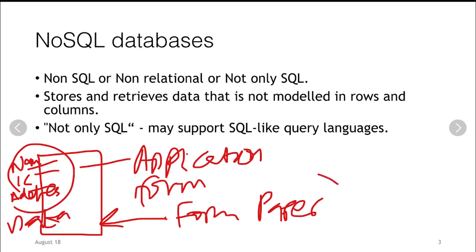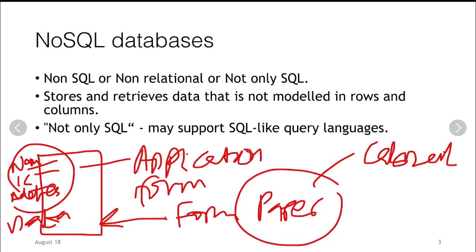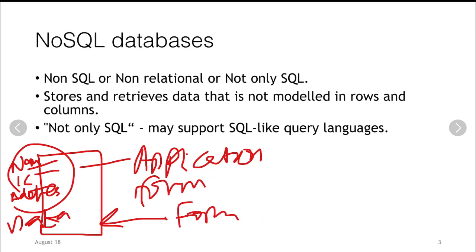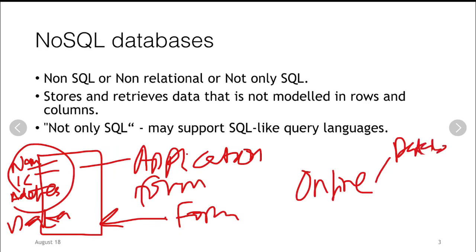After that, these paper forms would be stored in a cabinet. This is the manual way of storing data. But eventually, we moved to storing them online, where all of those data are stored in databases.